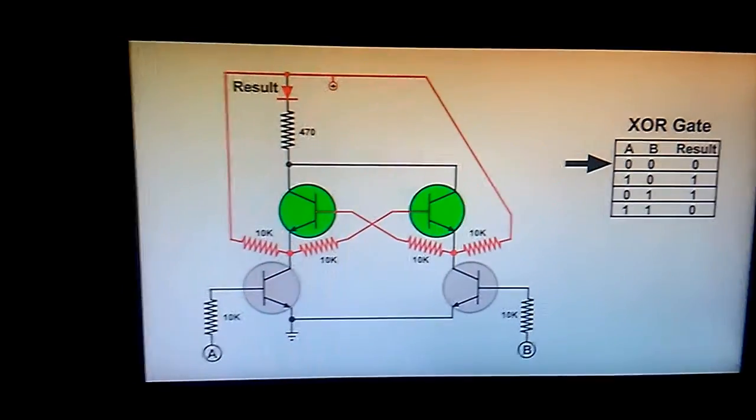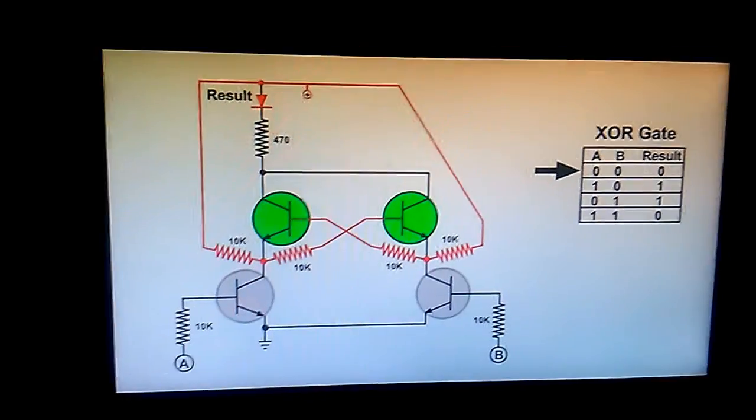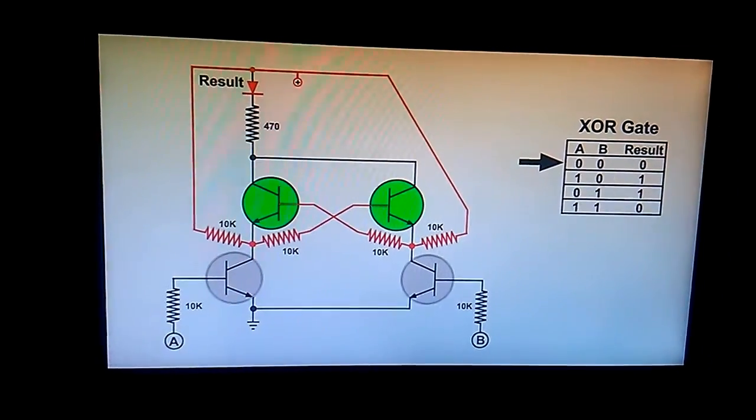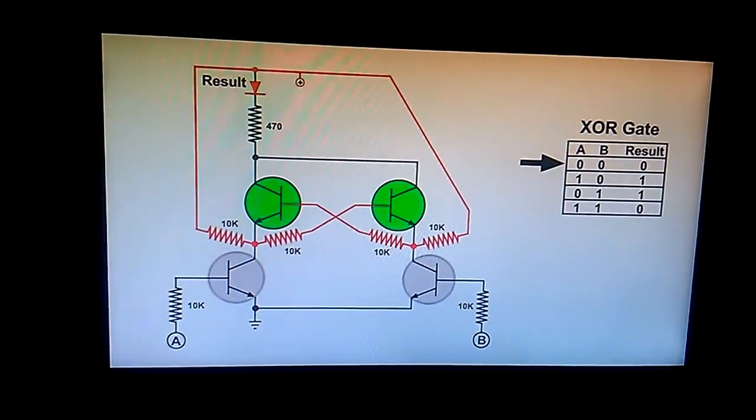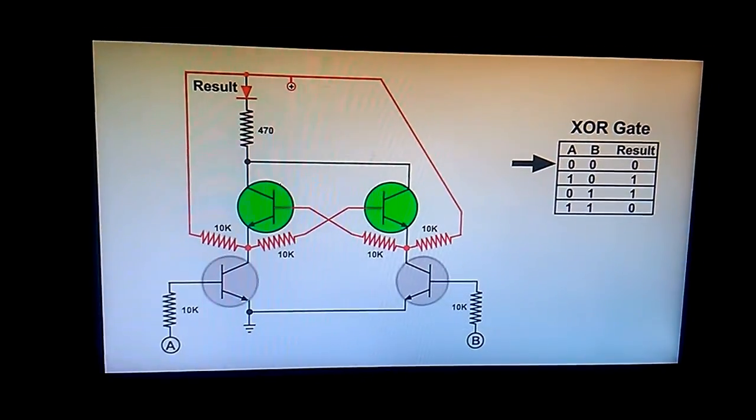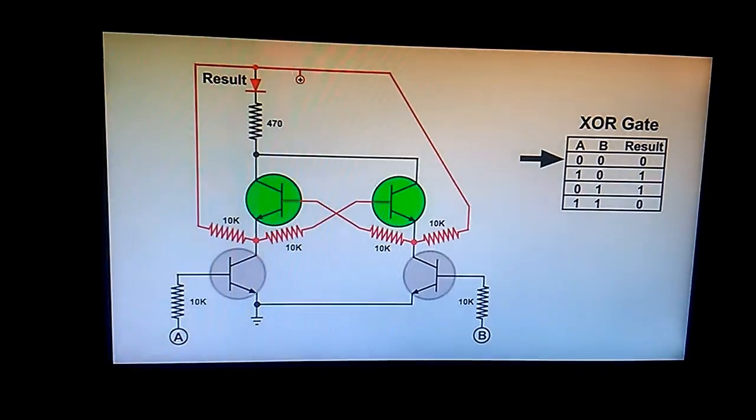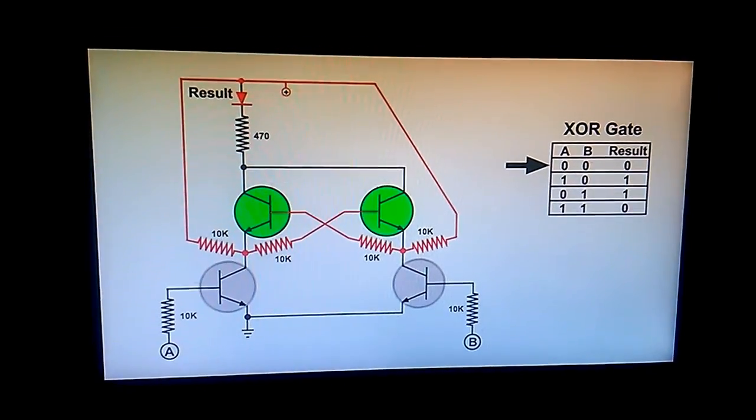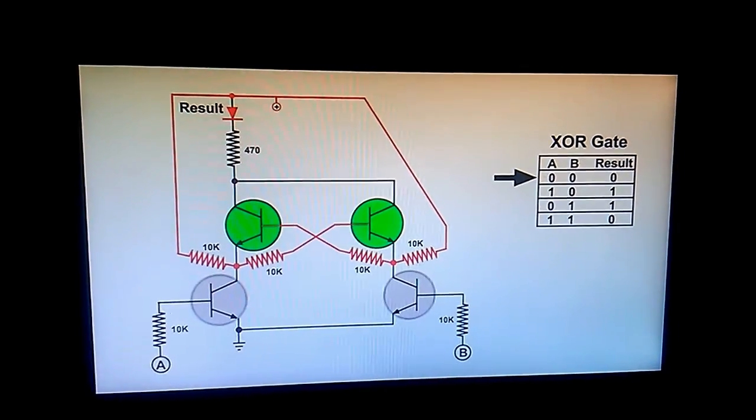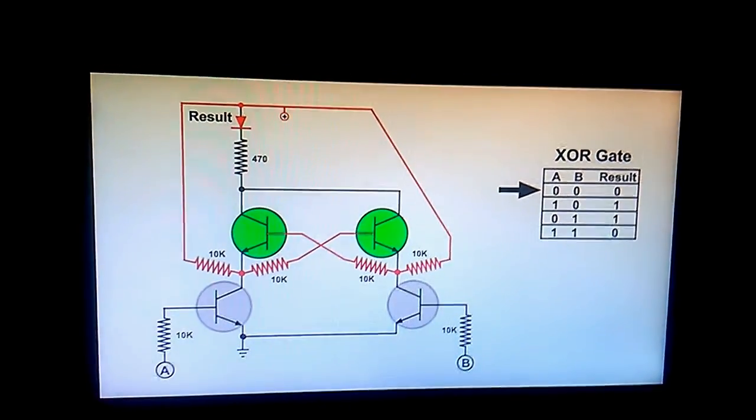I apply power to the circuit, and with no input at A or B, the bottom two transistors are wide open. However, the top two transistors are biased to conduct through those 10k ohm resistors that lead up to the positive side of the power supply. Now when I put an input at A...